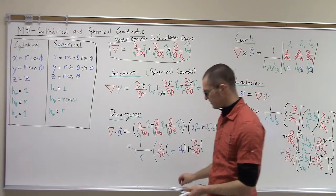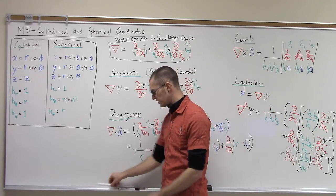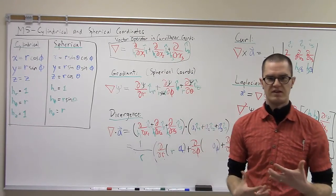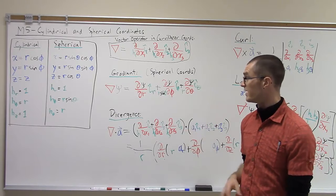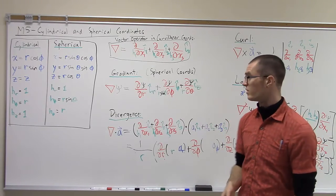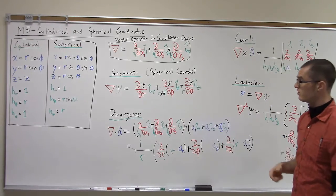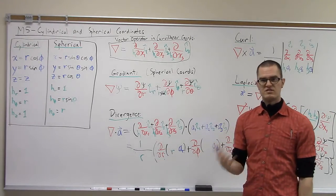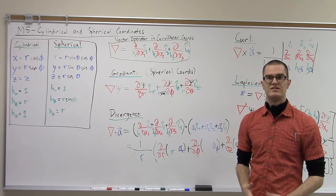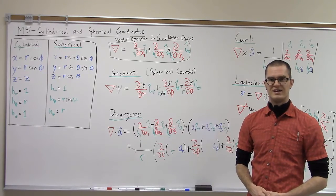Try it for yourself — it's a little bit complicated and you have to pay attention to the counting for all of the scale factors and the different derivatives. Try working out what the curl is in the spherical coordinate system until you get the feel for it. This concludes the series on curvilinear coordinate systems. Thank you.